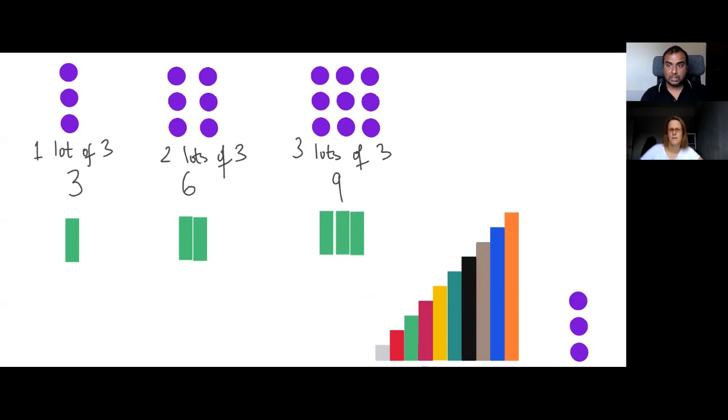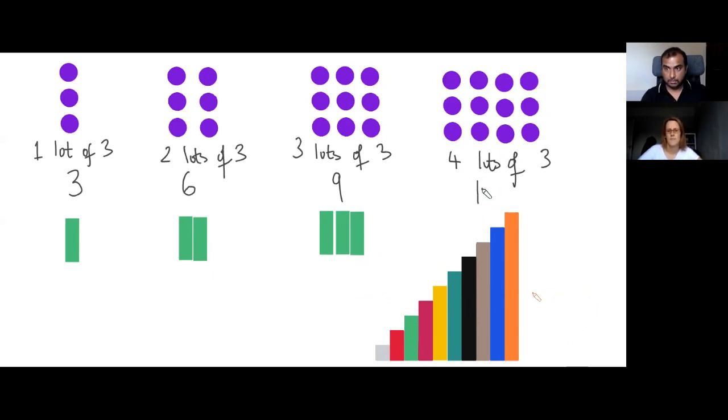The next one in the sequence? That would be four lots of three. Let's do that. Okay. That gives us a total of? There's 12 dots altogether. Brilliant.